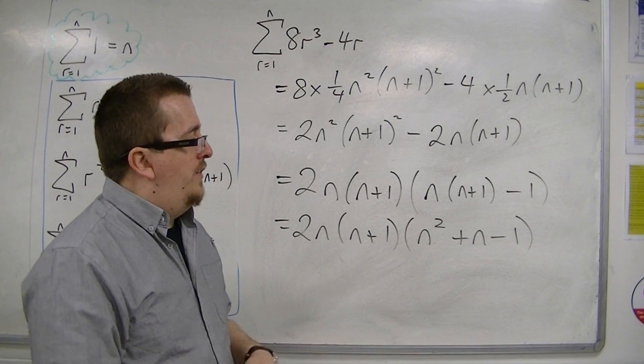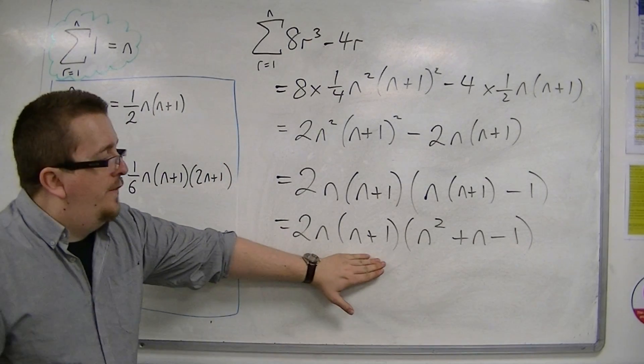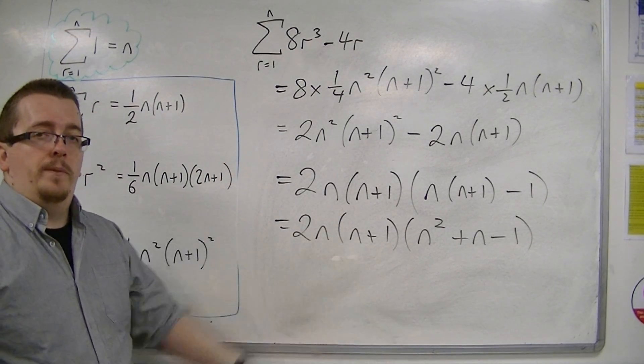So n²+n-1, that can't be factorised any further, so this is as far as we can go with this one.